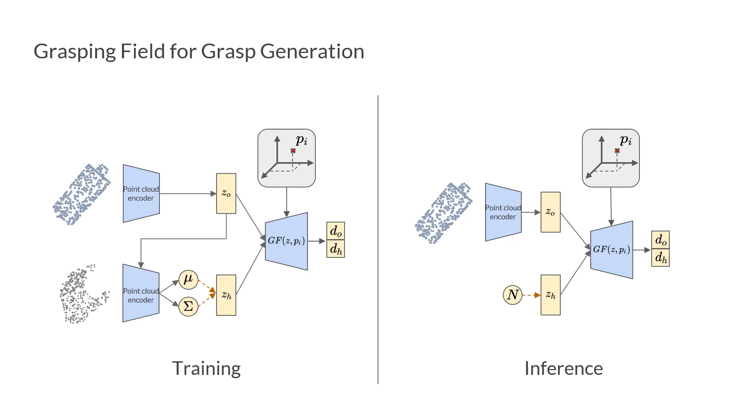During inference, the hand latent code is sampled from the Gaussian distribution. Finally, the full mesh is obtained by discretizing the space using the marching cube algorithm.